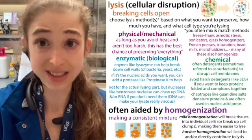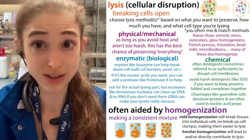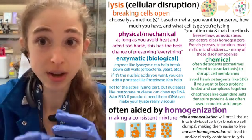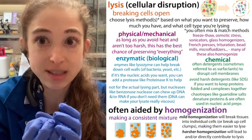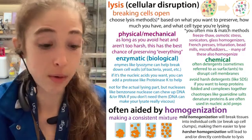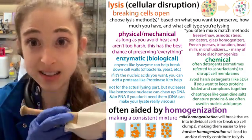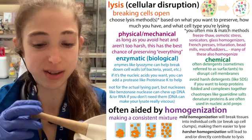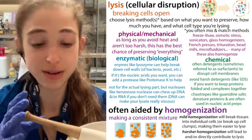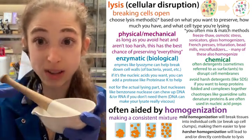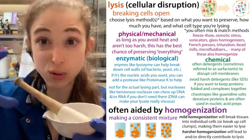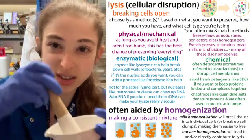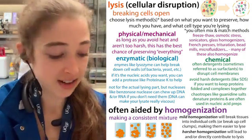Whenever you're doing these things with cells, you typically want to keep them cold. When we're doing sonication, we often do it in an ice bath. If we're grinding things, we often do cryo milling or cryo grinding — you cool with liquid nitrogen, freeze your samples in liquid nitrogen, and then grind.